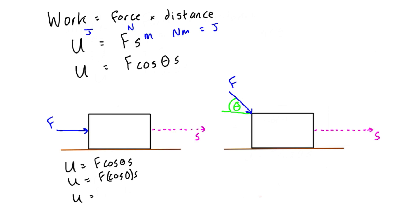Cos of zero equals one, so U equals F S. That's why you sometimes see it written as just U equals F S - that's for the case where the force and displacement are in line. For the example on the right, the expression is still F cos theta S.